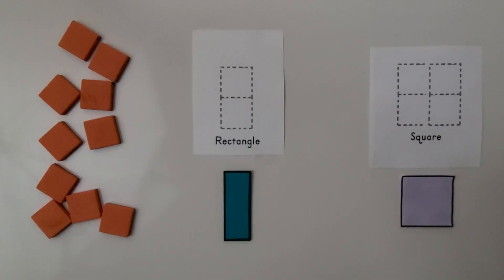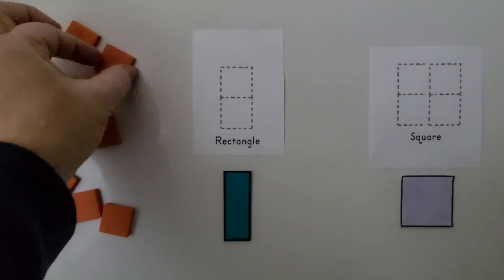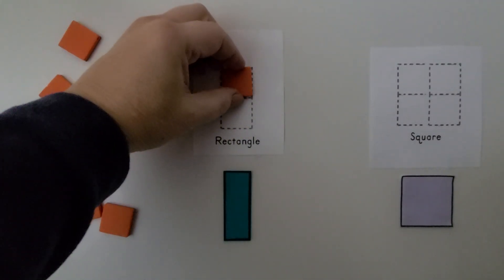We can use several squares that are the same size to make new shapes. So here we've got several squares, and we can use two squares.